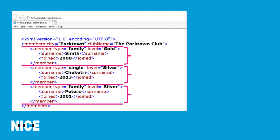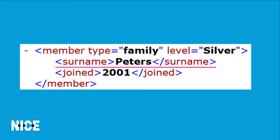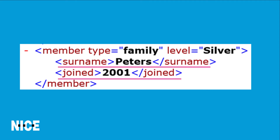For each member, the file stores four pieces of information. The type is either family or single. The level is either gold, silver, or bronze. The file also stores the member's surname and the year they joined. Note that type and level are stored as attributes, while surname and joined are stored in nodes.